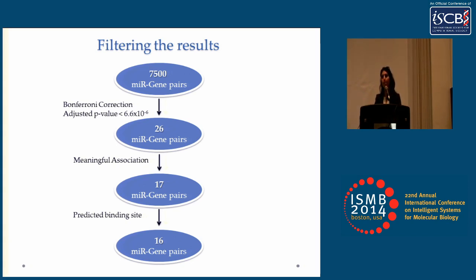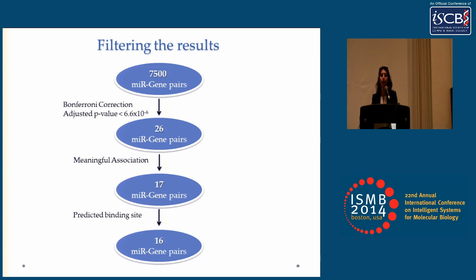The audience member suggested that for the one pair lacking a predicted binding site, CLIP data from brain tissue (e.g., from the Darnell lab) could be consulted to identify non-canonical seed matches. They also asked whether protein interactions were examined to determine if the microRNA might act indirectly through a cofactor. The presenter confirmed they only checked for direct interactions, so indirect mechanisms were not tested.